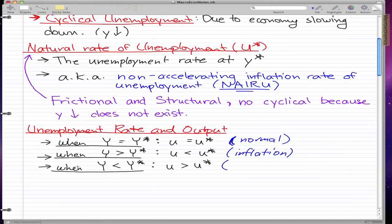Now when output is less than the equilibrium output, you know right away that we have recession and in this case the unemployment rate is greater than the natural rate of unemployment and this is when we have a recession.